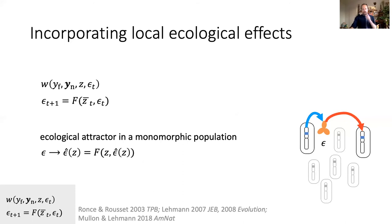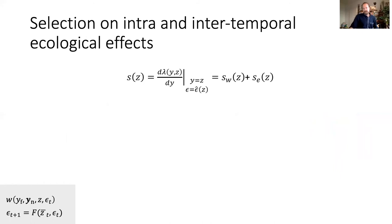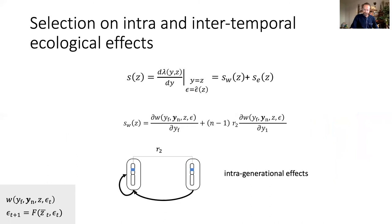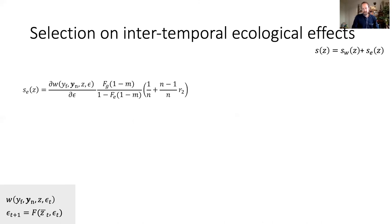In a monomorphic population, this mapping converges to an ecological attractor denoted epsilon-hat. The directional selection gradient in this case has already been derived in several papers using different methods and slightly different assumptions, but they all converge to a similar result. Working from invasion fitness, the directional selection gradient can be decomposed as the sum of two terms: the first is the classical selection gradient seen earlier without local ecological effects, incorporating direct mutant-mutant interactions between mutants living in the same generation. The second term, where m is dispersal probability and n is patch size, captures selection on inter-temporal ecological effects.